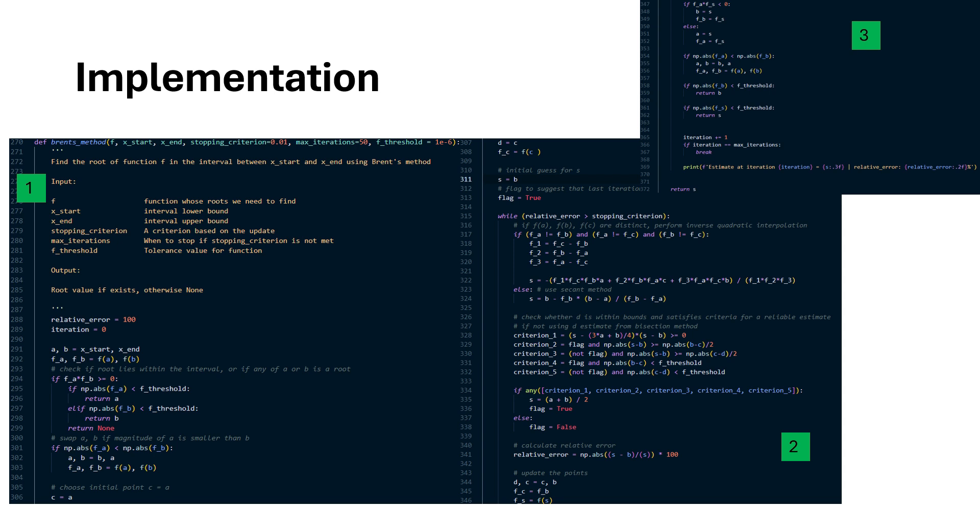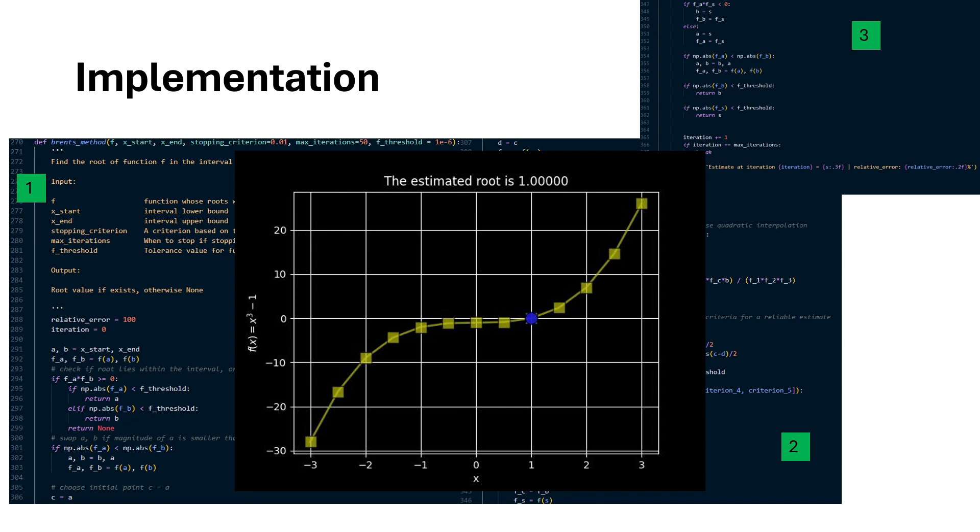This is the Python code for Brent's method. When applied to a function x^3 - 1, we were able to find the root in 9 iterations for the interval with an a value equal to -2 and b value equals to 5.